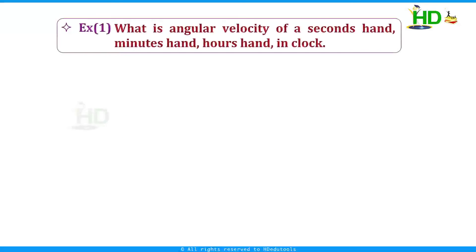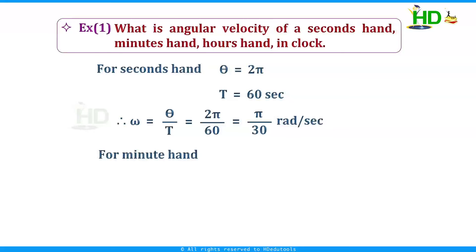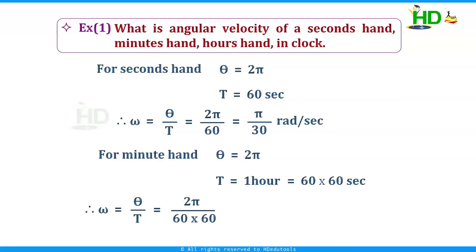What is the angular velocity of the seconds hand, minutes hand, and hours hand of a clock? For the second hand: it takes 60 seconds to complete 2π radians. So theta is 2π and T is 60 seconds. Angular velocity omega equals 2π/60, which is π/30 radians per second. For the minute hand: it takes 1 hour (60 times 60 seconds) to complete 2π radians. Angular velocity omega equals 2π divided by 3600, giving π/1800 radians per second.